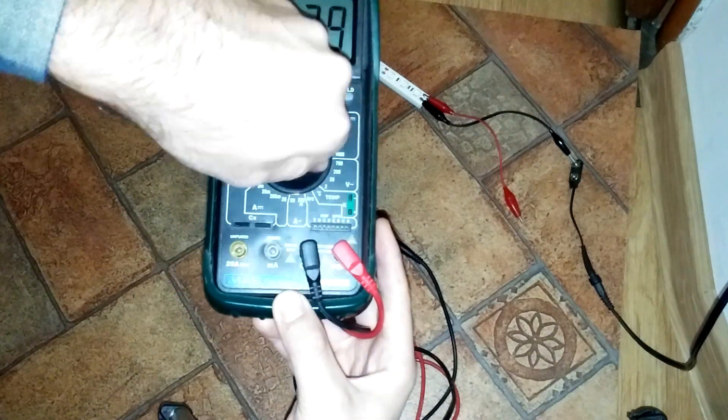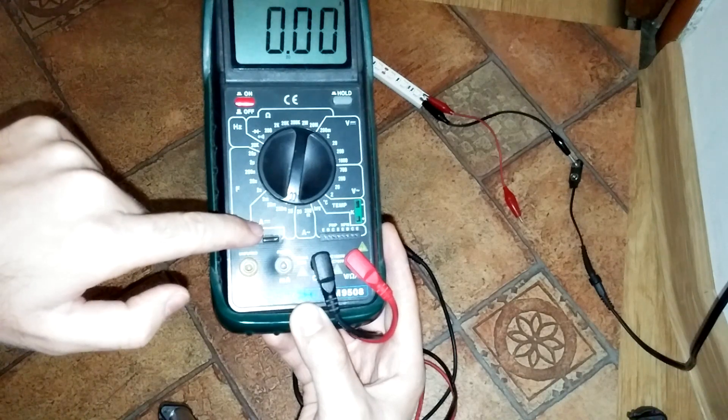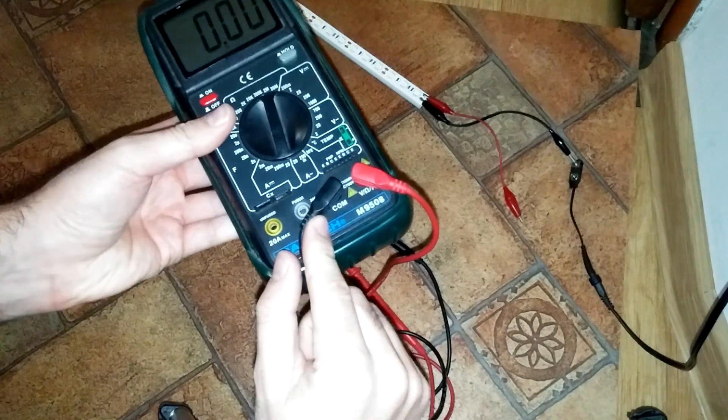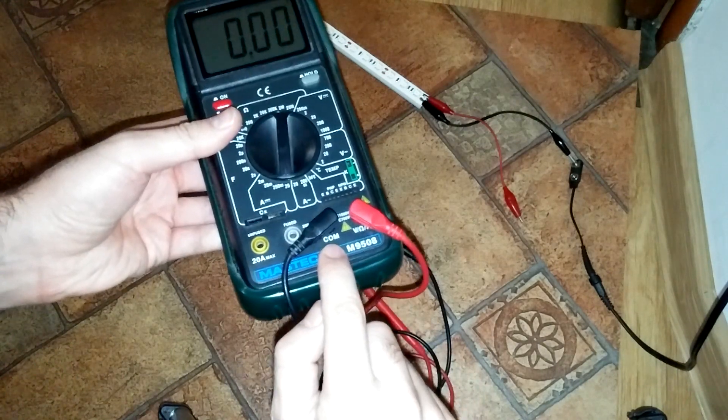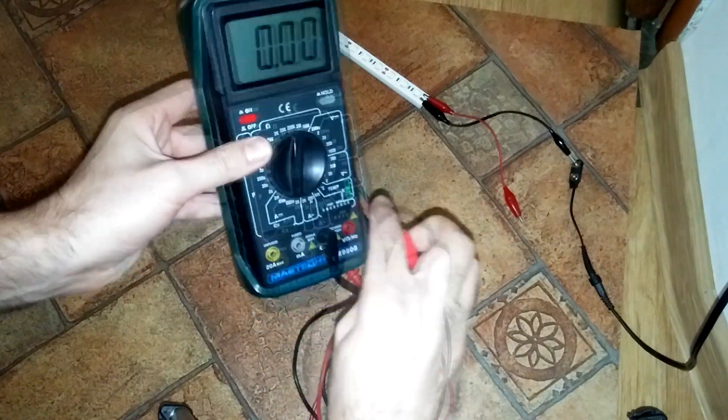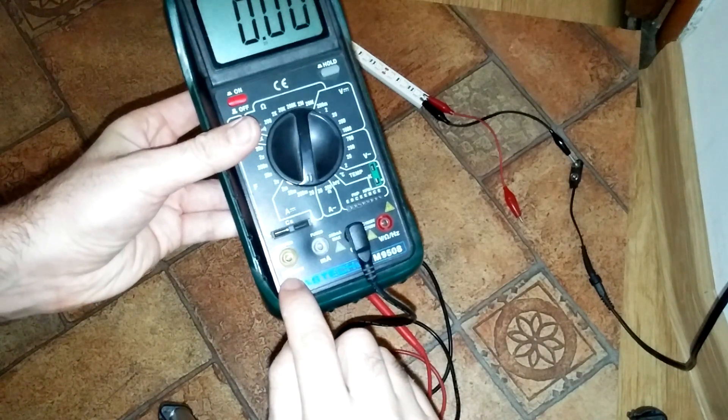Okay, so let's go to DC amp and the 20 scale. The black one is the common, you don't have to move that anywhere, but the red one just pull it out and set it to this one, 20 amps maximum.